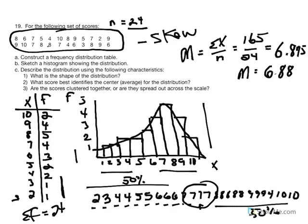The mode is the highest-occurring score — in this case, 8. So we have the mean at 6.88, the median approximately at 7, and the mode at 8. Because the distribution is skewed, these values aren't equal. When the distribution is symmetrical, the mean, median, and mode will all be the same value. These are just estimations and preparation for understanding measures of central tendency in Chapter 3.